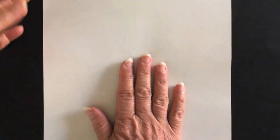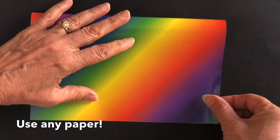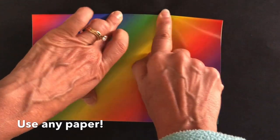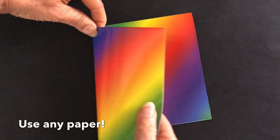I'm going to do it one more time with this rainbow paper. Again, folding in half from the top to the bottom and then folding across like a book.